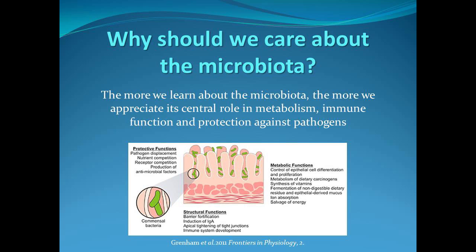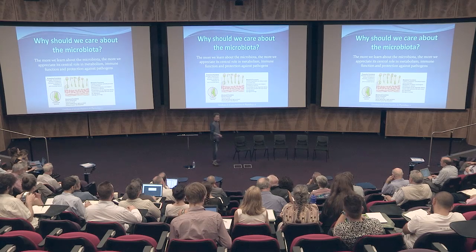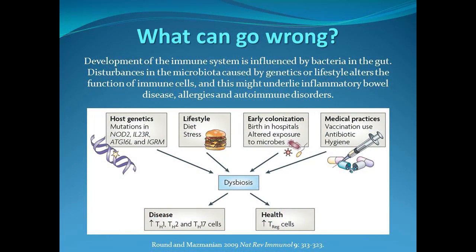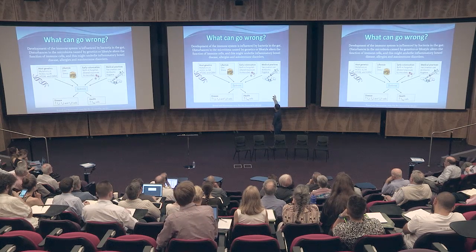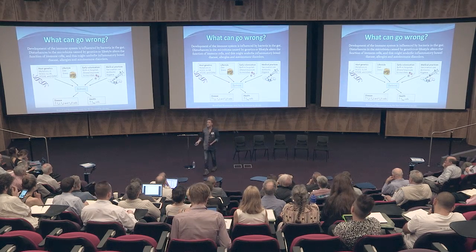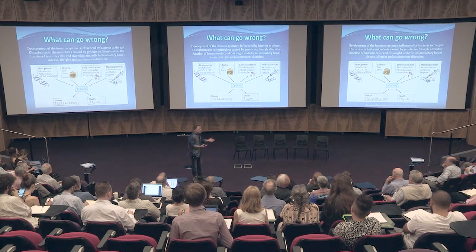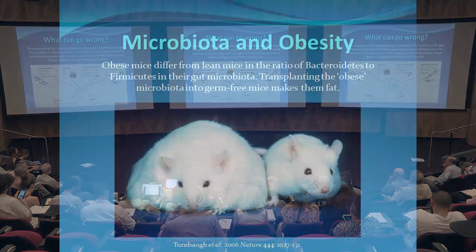Why should we care? It's becoming more and more obvious that our microbiota is part of us as an organism - important for educating the immune system, with roles in metabolism, and protecting us against pathogens. The causes of disruption include host genetics, lifestyle, diet, stress, colonisation, and medical practices - commonly a mixture of all four. These lead to what is called dysbiosis: an unbalanced microbial ecosystem that leads to various disease outcomes.